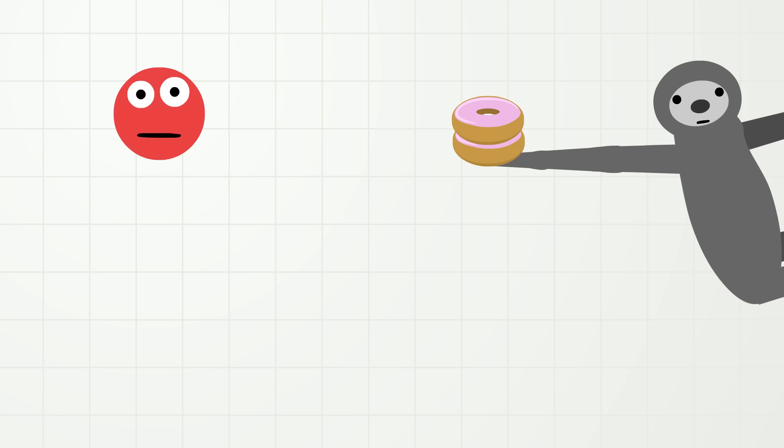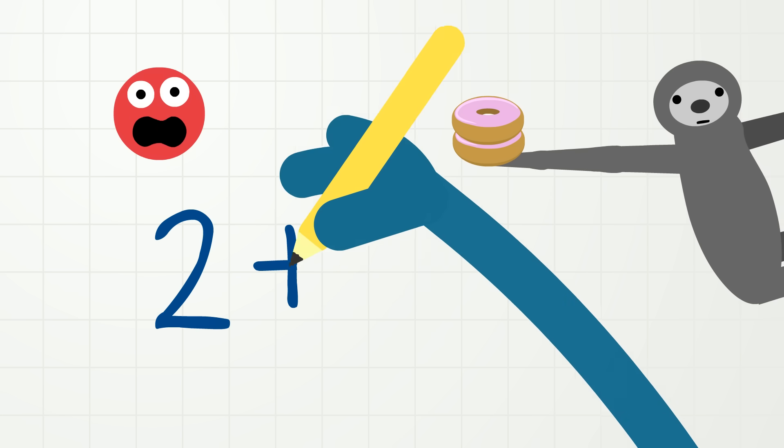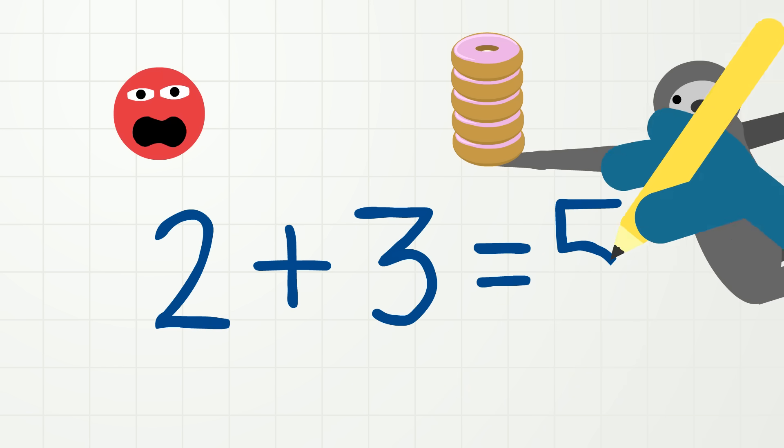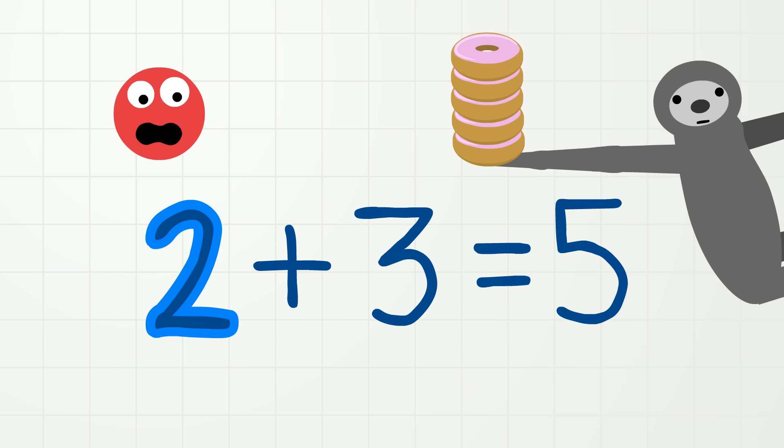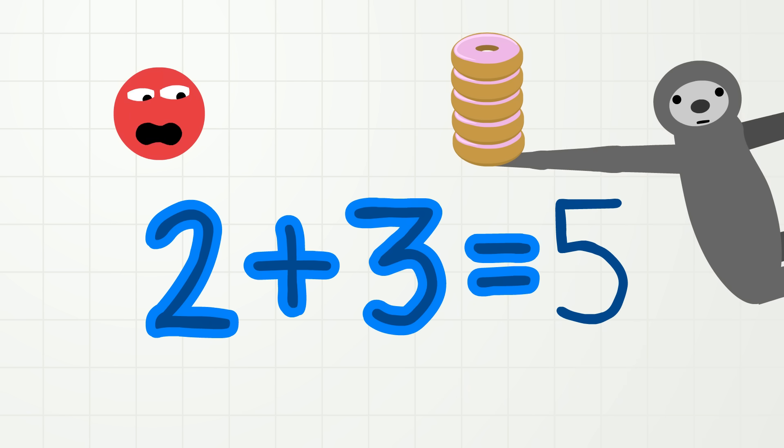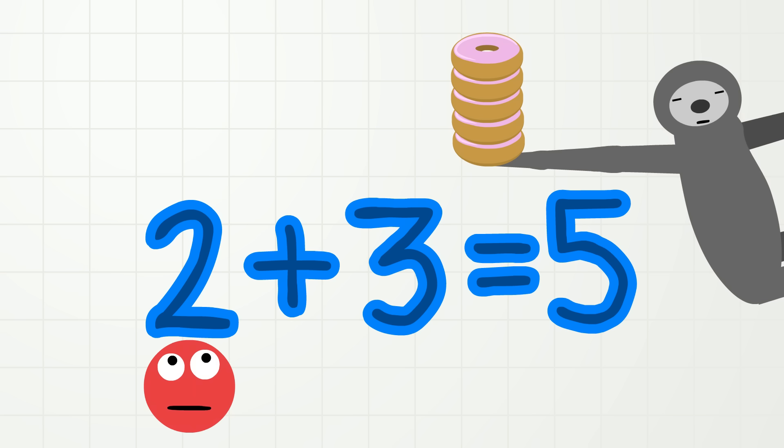First, the adding! Two donuts plus three donuts equals five donuts! Two plus three equals five! Two plus sign! Three equals sign! Five! Happy sloth!